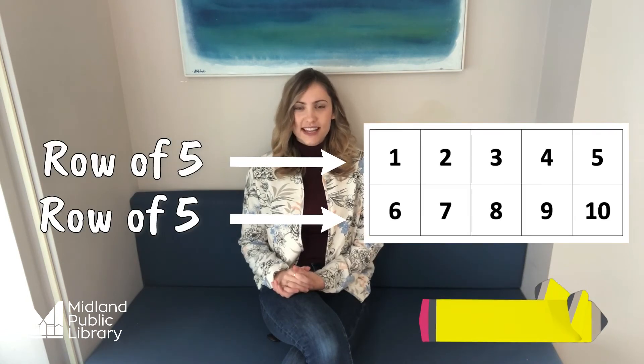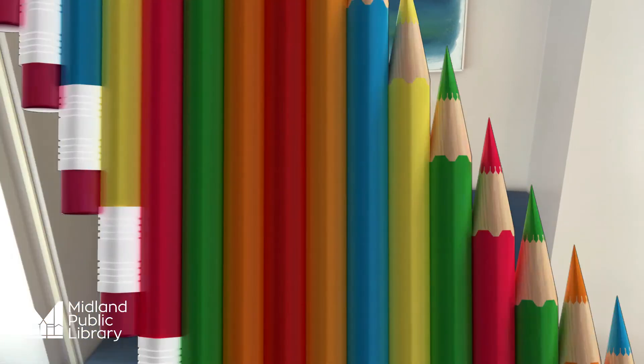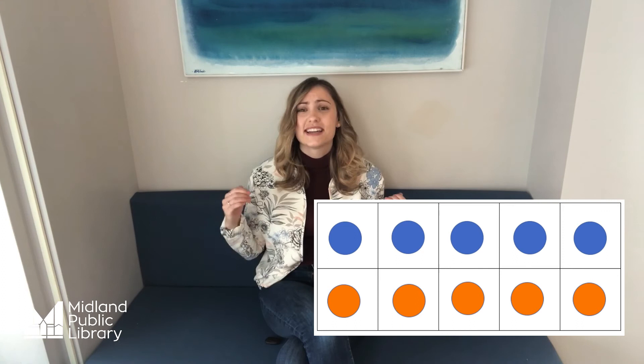To help your child better understand anchor numbers in their early years, I recommend using what's called an array. Arrays look like this, and they break object sets into anchor numbers like 5. As your child learns to subitize and recognize their anchor numbers, they're going to know that this means 5. They'll know that this means 7 because it's 2 more than 5. They'll know that this means 4 because it's 1 less than 5. And they'll know that this means 10 because it's 2 sets of 5.